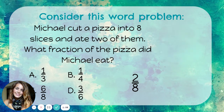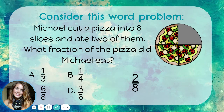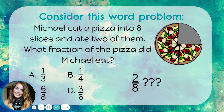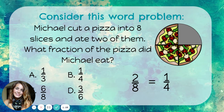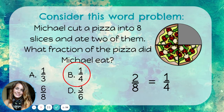Instead of thinking about a pizza cut into eight slices, let's imagine that Michael had cut it into four slices. You can see here he ate the same amount of pizza, but this time he ate one out of four slices, or one-fourth of the pizza. Two-eighths is equivalent to one-fourth, so the answer to this problem would be B, one-fourth. But unless you understand equivalent fractions and know how to write them in simplest form, you wouldn't know which answer choice to choose even though your answer, two-eighths, was correct.